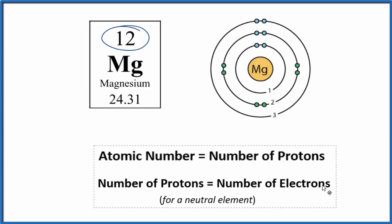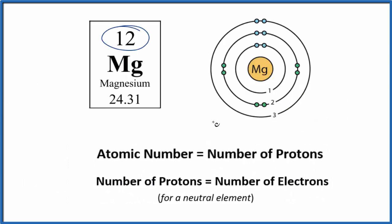The atomic number tells us that we have 12 protons in the nucleus of the magnesium atom. Here's the nucleus here, so we have 12 protons. Atomic number is the number of protons. The number of protons also equals the number of electrons for a neutral element, and all of the elements on the periodic table are neutral, so we have 12 electrons as well.